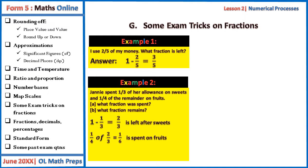Which means she spent one-third on sweets and one-sixth on fruits. The total spent is given by one-third plus one-sixth, which is equal to a half. And therefore the fraction left is one minus a half, which is equal to a half.